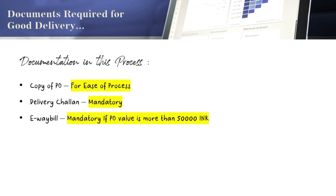The third required document is the E-Way Bill. As per the Government of India's GST regulation, if we are moving any shipment with an order value more than ₹50,000, we need to provide an E-Way Bill number. In that case, the supplier has to create the E-Way Bill in the GST portal and attach it to the dispatch documentation.